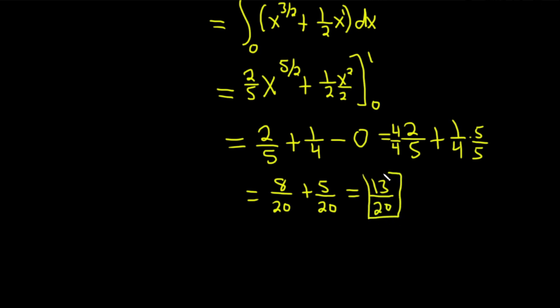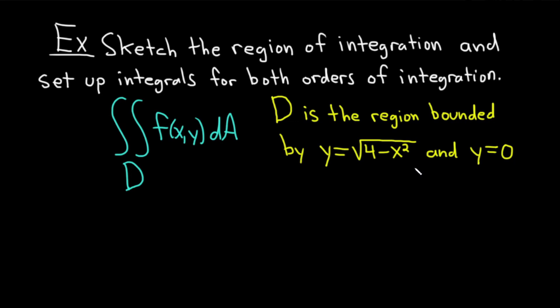Not a very difficult problem, but it does take some time and it's an exercise in being careful. Now let's do the next example: sketch the region of integration and set up integrals for both orders of integration. We have a double integral over d, where d is the region bounded by y equals the square root of 4 minus x squared and y equals 0.